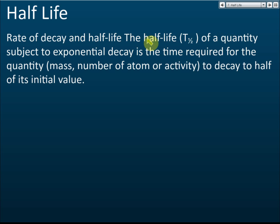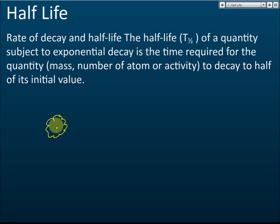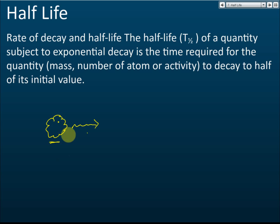The half-life of a quantity subject to exponential decay is the time required for the quantity — the mass, the number of atoms, or the activity — to decay to half of its initial value. Let's say you have a radioactive sample, a piece of rock that emits radioactive emissions. There are a few ways to measure the radioactivity of the substance. We can measure the mass — let's say this is sodium.